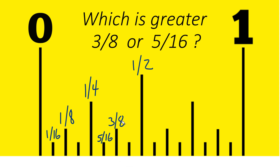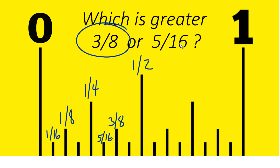And you can see that three eighths is greater — it's larger than five sixteenths of an inch on our ruler or tape measure here. If you want to know how much larger it is, this is a sixteenth of an inch right here, and that's the same distance. So it's only one sixteenth of an inch larger than five sixteenths, but it is still larger. Three eighths is larger than five sixteenths, only by a sixteenth of an inch.